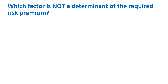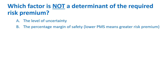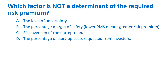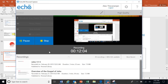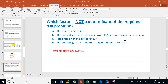Stop and think: which factor is NOT a determinant of the required risk premium? The level of uncertainty, the percentage margin of safety, the risk aversion of the entrepreneur, or the percentage of startup costs requested from investors? The correct answer is the risk aversion of the entrepreneur — that doesn't come in. It is the risk aversion of the angel investor that matters.